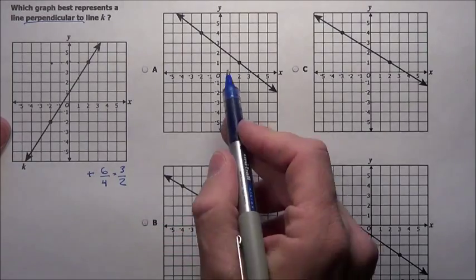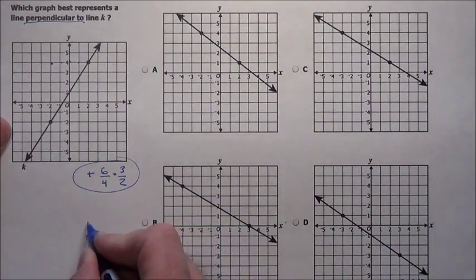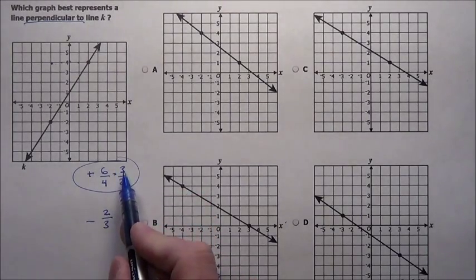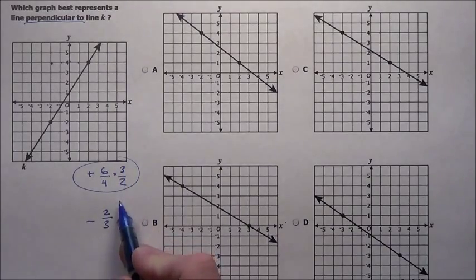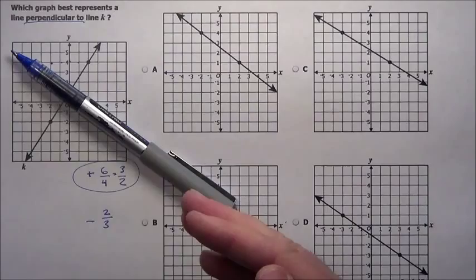So what we are going to do is we are going to find one of these guys that has a slope going the opposite way, so I need it to be negative, and we are simply going to flip that 2 thirds. Since this guy's slope is 3 halves, we are going to flip it, the reciprocal, 2 thirds, and negate it so that it goes the opposite way.